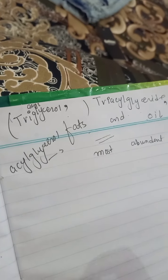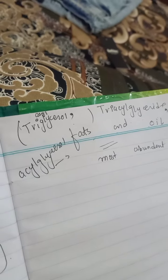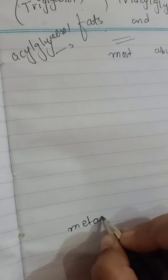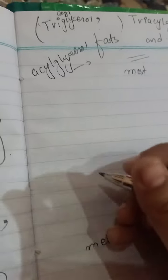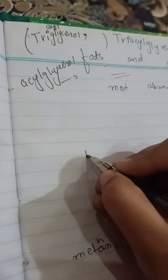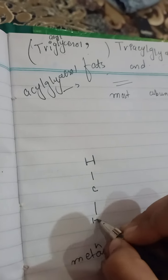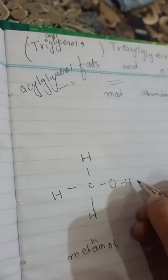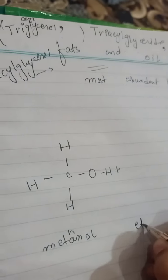Acylglycerols are defined as esters. Let me give you the example of methanol — that is a glycerol, which is the alcohol. The formula of methanol contains hydrogen, carbon, and hydrogen. And here I am taking ethanoic acid, which is a fatty acid. Its formula contains carbon, oxygen, and hydrogen.